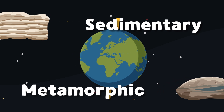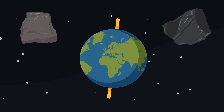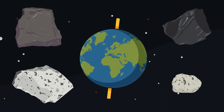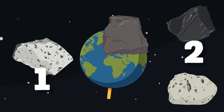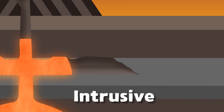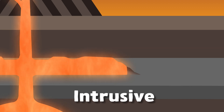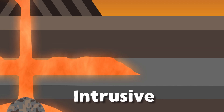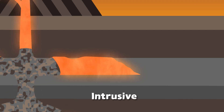Igneous rocks can have various textures, which are classified into two primary categories. Intrusive igneous rocks form below the earth's surface when magma cools slowly. I'm glad you've learned this.